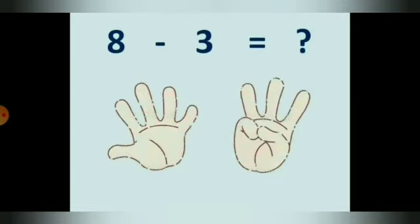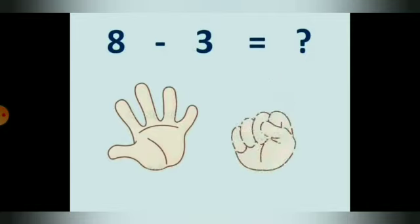Here we have to subtract 3 from 8. So, how many fingers do you have to put out? You have to put out 8 fingers. Put out 8 fingers. Very good. Now, how many fingers do you have to put down? 3. Put down 3 fingers. How many are left? 1, 2, 3, 4, 5. So, 8 minus 3 is equal to 5.